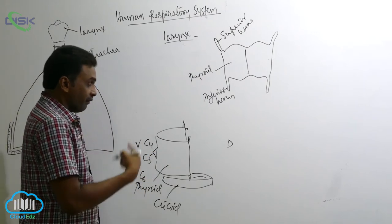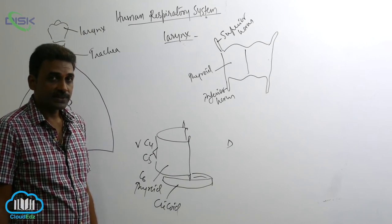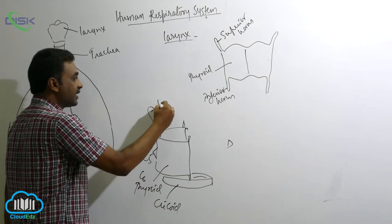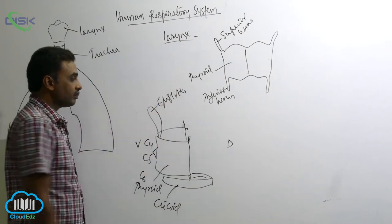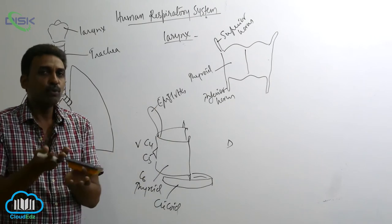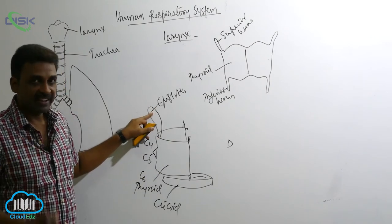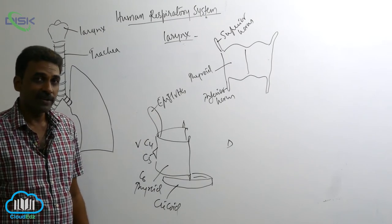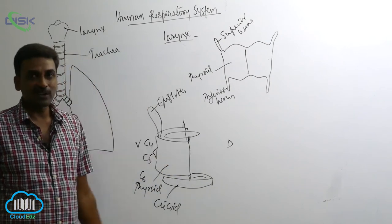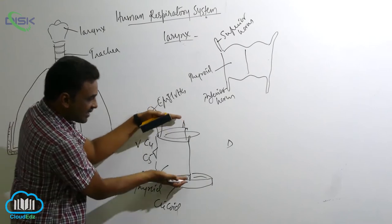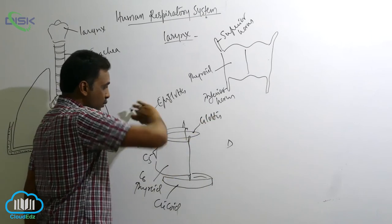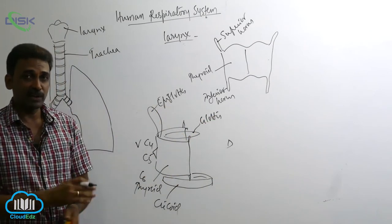We also have a pair of arytenoids and one epiglottis. The epiglottis originates from the thyroid cartilage. It is a spoon-shaped cartilage made up of elastic cartilage covered by a mucous membrane. The area it covers is called the glottis. The epiglottis covers the glottis whenever food is coming into the laryngopharynx.